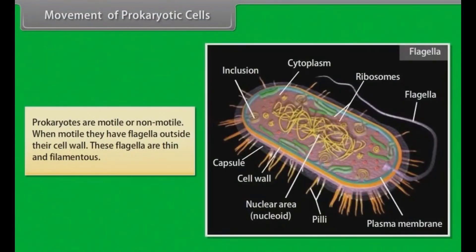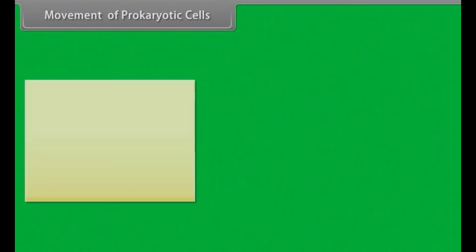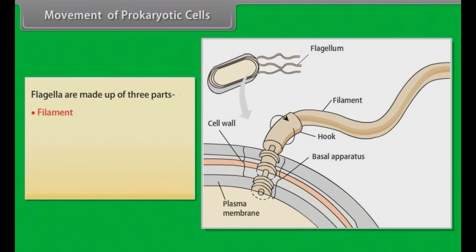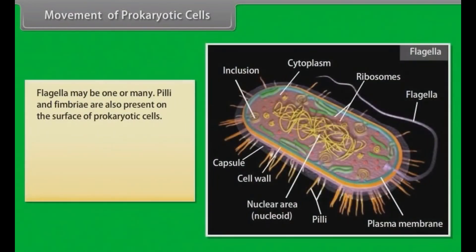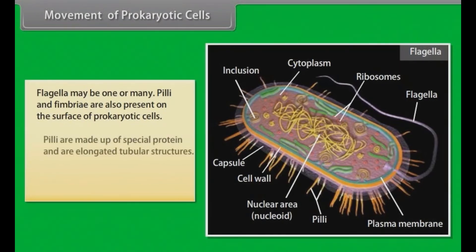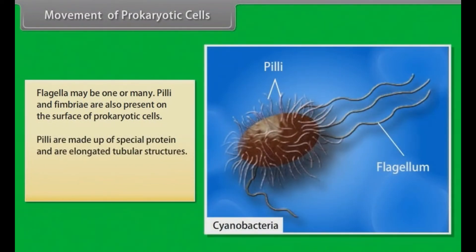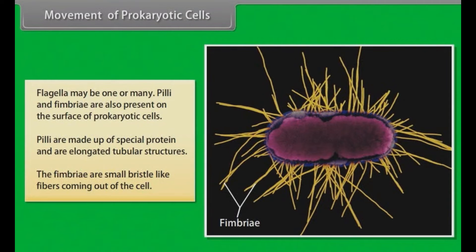Prokaryotes are motile or non-motile. When motile, they have flagella outside their cell wall. These flagella are thin and filamentous and are made up of three parts: filament, hook, and basal body. The filament is the longest portion, extending from the cell surface to the outside. Flagella may be one or many. Pili and fimbriae are also present on the surface of prokaryotic cells. Pili are made up of special protein and are elongated tubular structures, while fimbriae are small bristle-like fibers coming out of the cell.